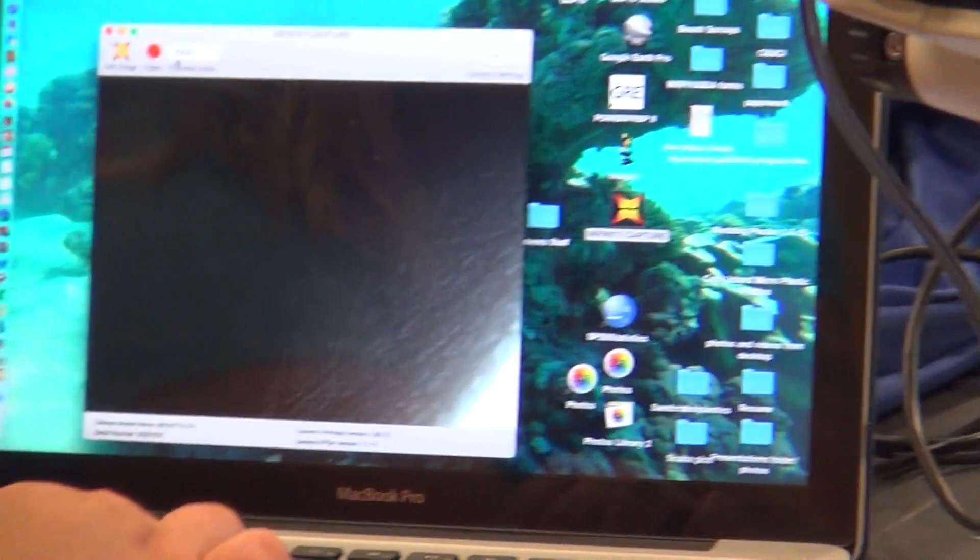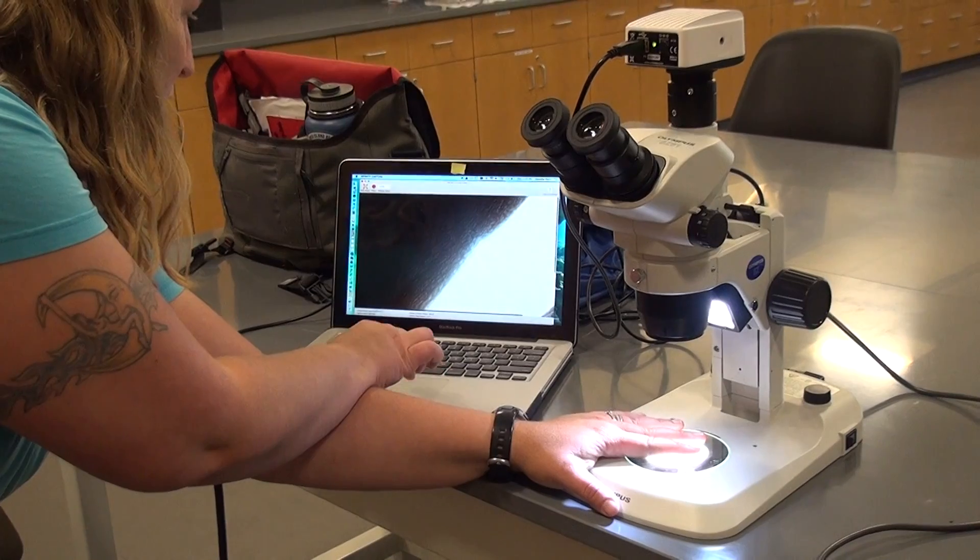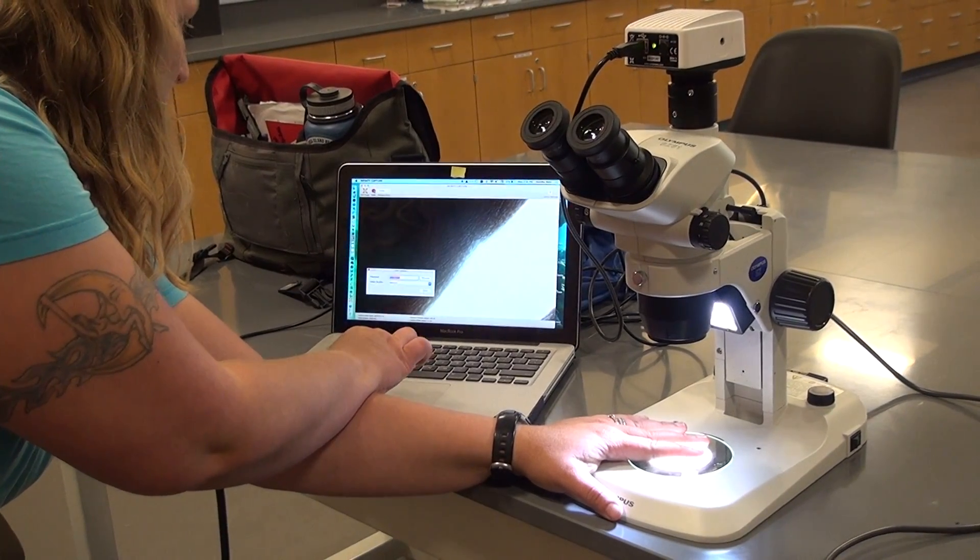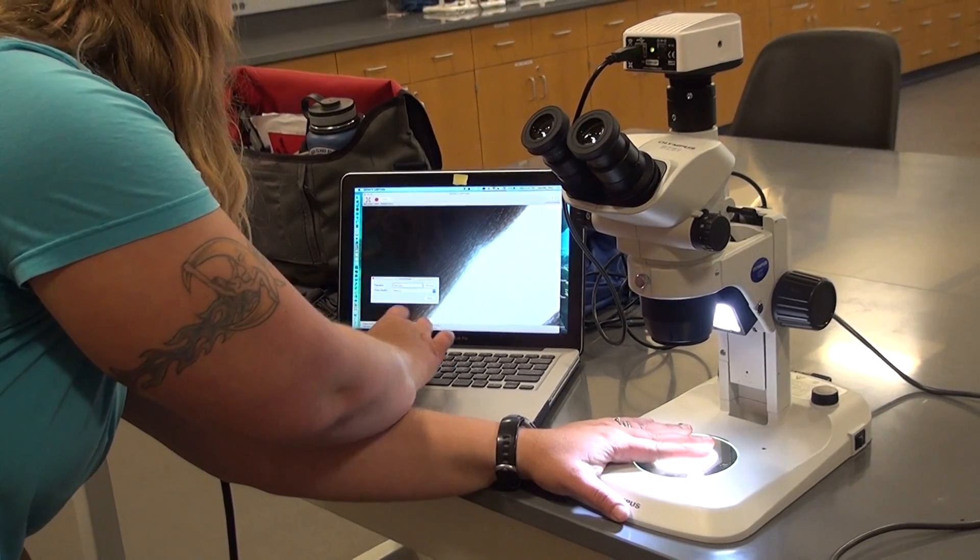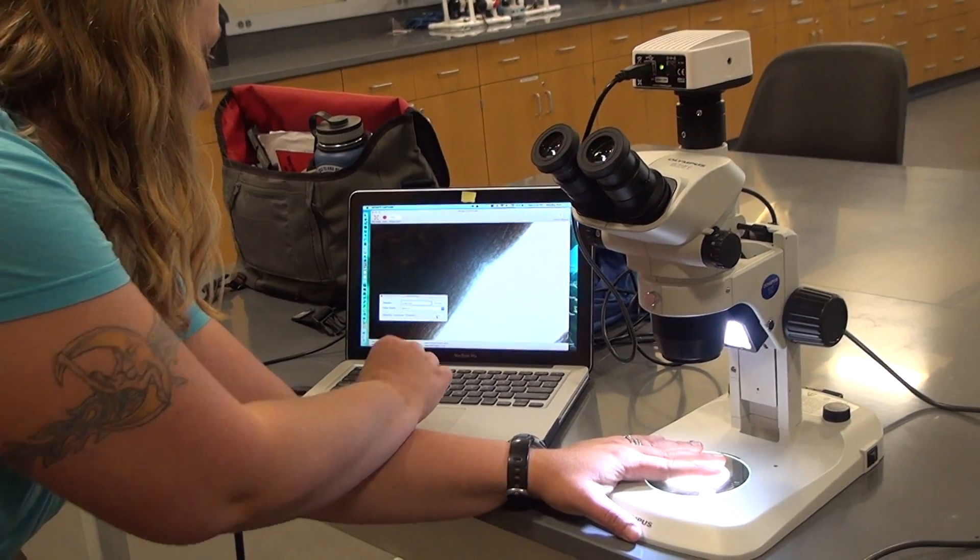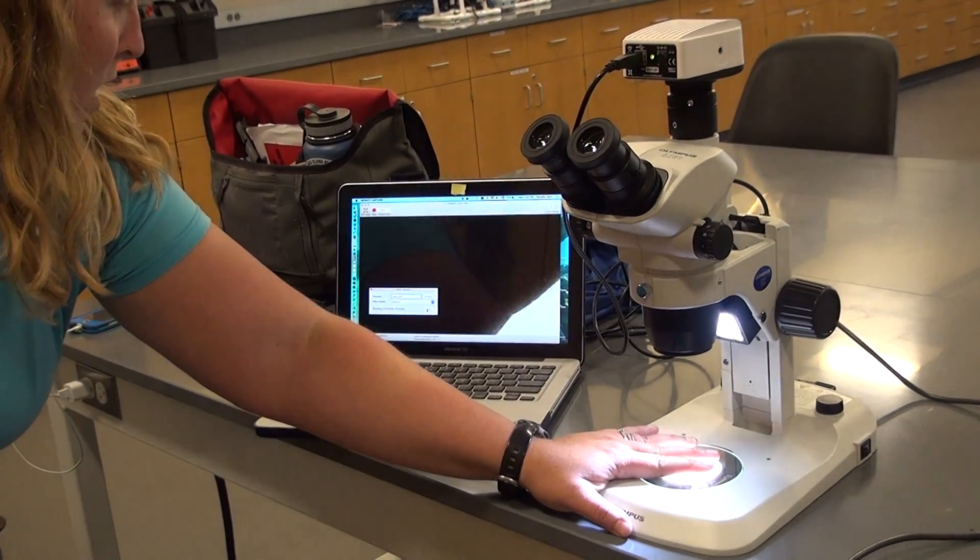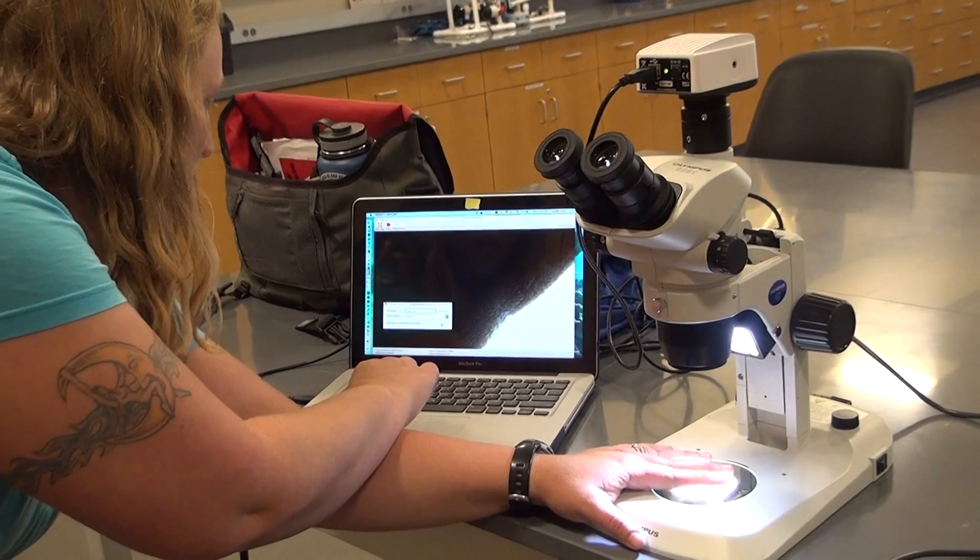You can also video. So say you're dissecting something, or you have something alive on your camera. You click video. Then you have to name it. Test. And then you have to click start. And so now it is videoing my hand moving around, or say a worm, or whatever you want. Then you click stop.